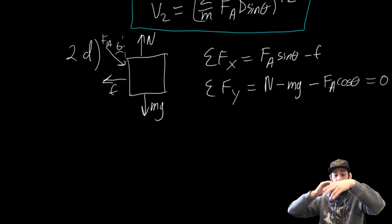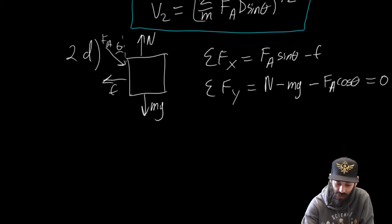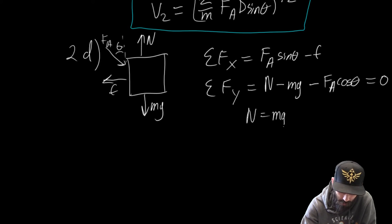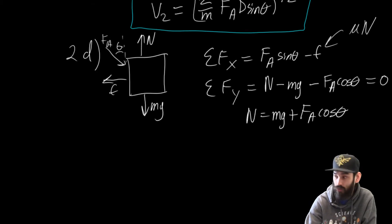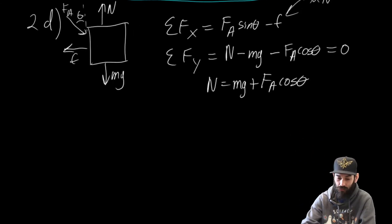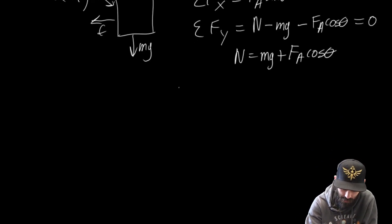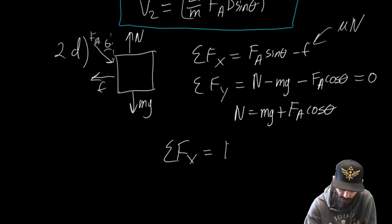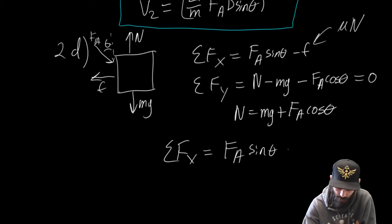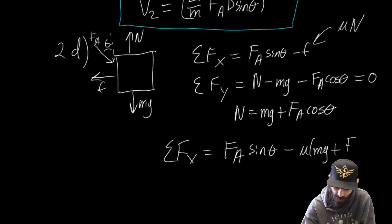The sum of the forces in the y direction is going to be equal to N minus mg minus F_A times cosine of theta. From the sum of forces in the y direction, we know this is zero — it doesn't move up or down. This tells us the normal force is equal to mg plus F_A times cosine of theta. Now the force of friction, because this is in motion, is the coefficient of friction times the normal force. Plugging this in, the sum of forces in the x direction is going to be equal to F_A times sine of theta minus mu times (mg plus F_A times cosine of theta).